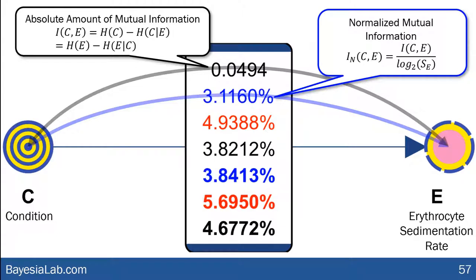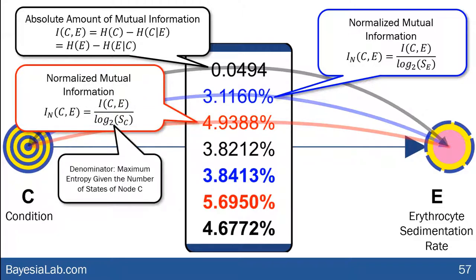Therefore, we have normalized mutual information available that takes into account the number of states for ESR. Blue always means going in the direction of the arc; the red number always refers to the opposite direction. So the first blue value is normalized mutual information normalized based on the maximal entropy of ESR, and the other way is normalized by the maximum entropy given the number of states of the node 'condition.'